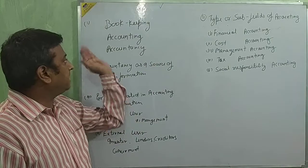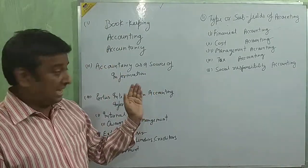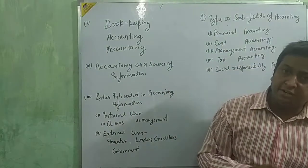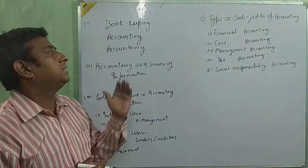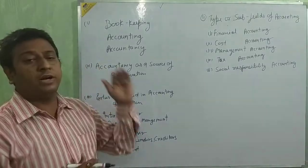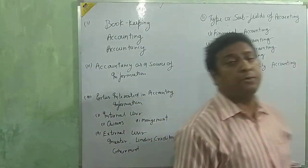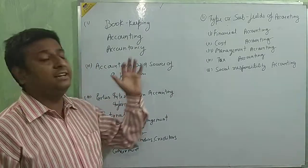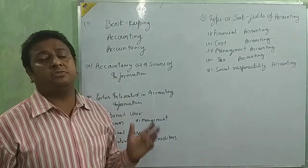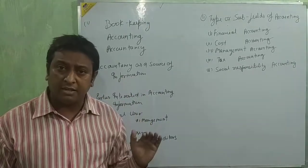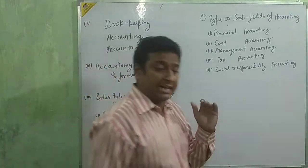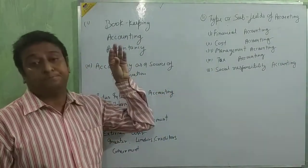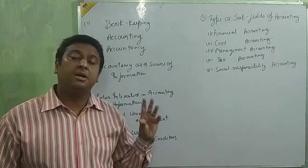Bookkeeping is the first primary function of accounting. After bookkeeping, we go into accounting. In bookkeeping, we take all entries and write them in journals, vouchers, or different supporting books. Then we classify — making the ledger, putting entries in different books like cash book and bill payable book. Then we take the balance of the ledger and transfer everything to the trial balance, where we check for mathematical faults.